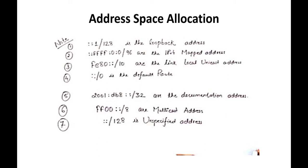Then there is the unspecified address, written as double colon (::) with /128. All sections are zero. In each section there are four hexadecimal digits, and one hexadecimal digit equals four binary digits, so each section has 16 binary zeroes. The unspecified address is not used for any specific work — it is unusable. It is present in the IPv6 specification in your syllabus but is not assigned to any specific function.